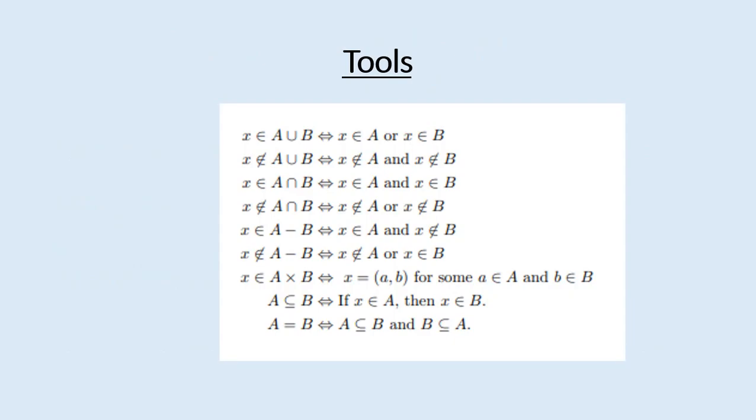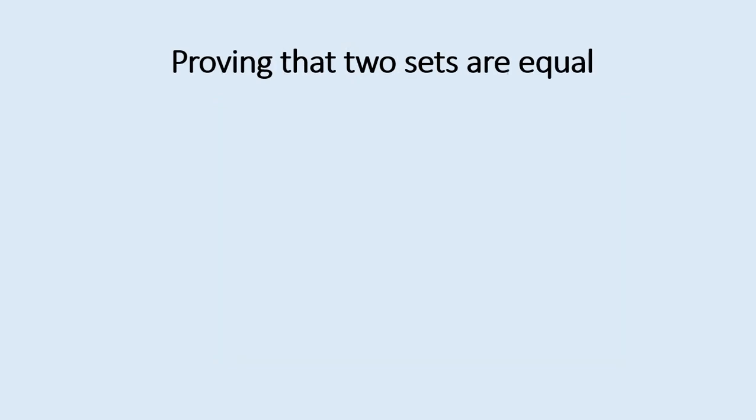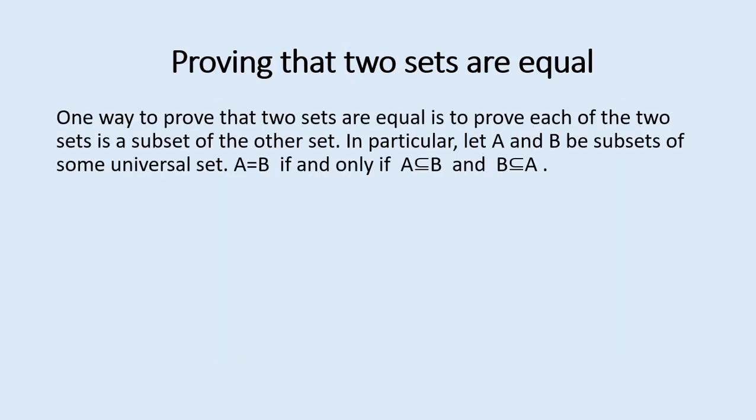Here are some tools you will find handy going forward. We are going to prove that sets are equal to each other by showing that they are both subsets of each other — you can pause the video and write these down. To prove that two sets are equal, one approach is to prove each set is a subset of the other. Let A and B be subsets of some universal set; A equals B if and only if A is a subset of B and B is a subset of A.